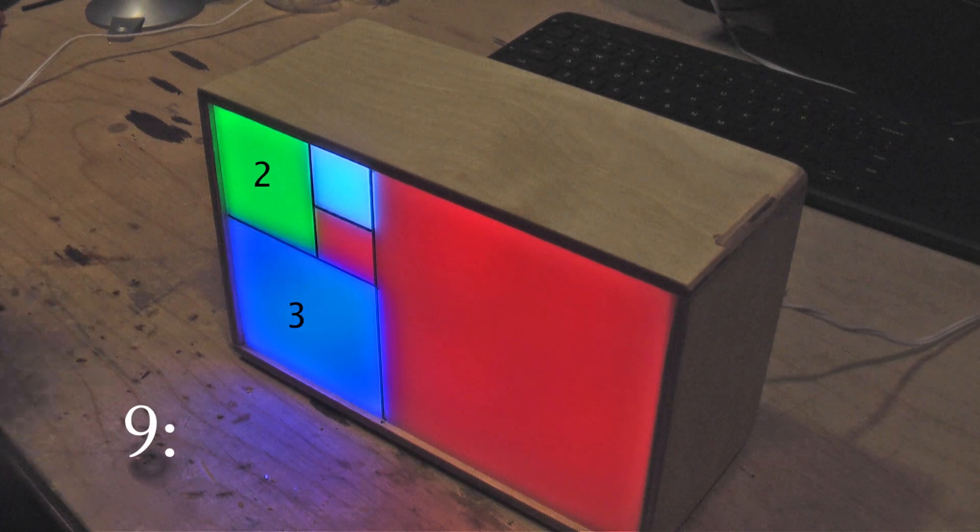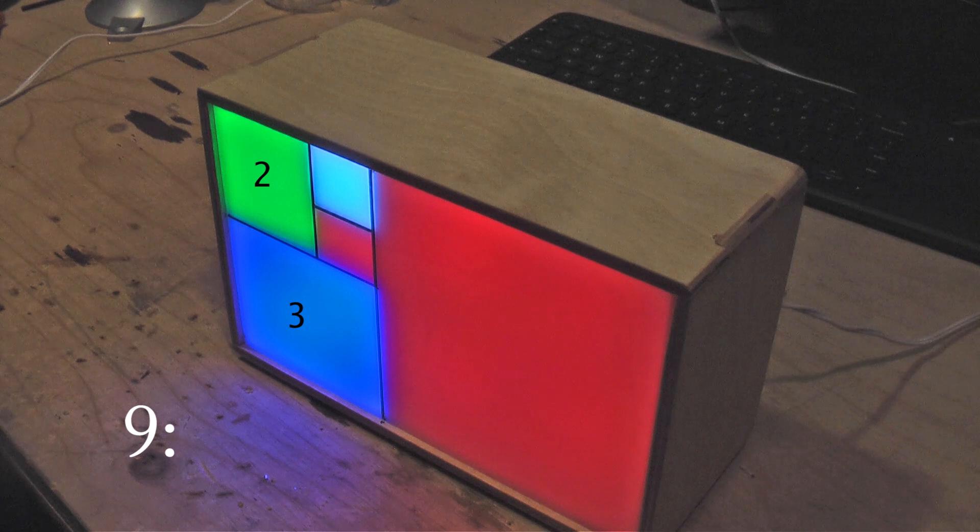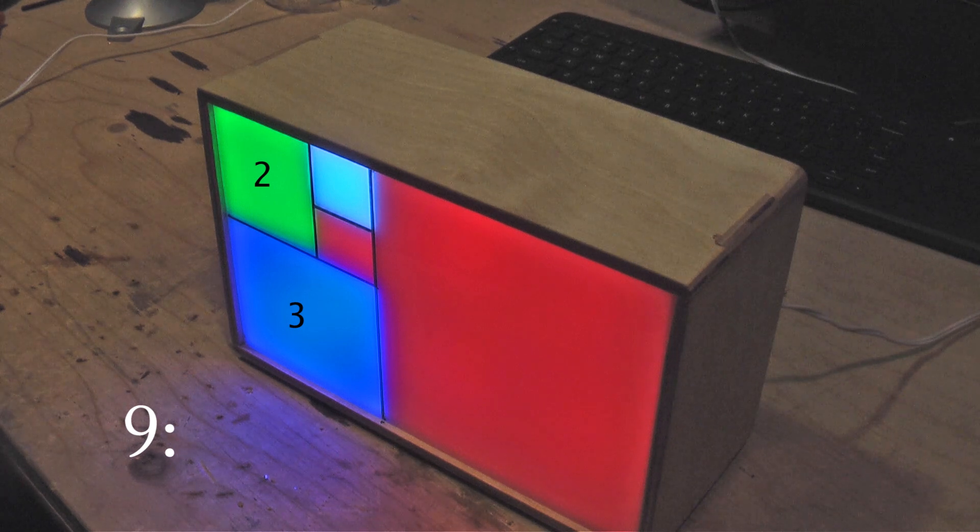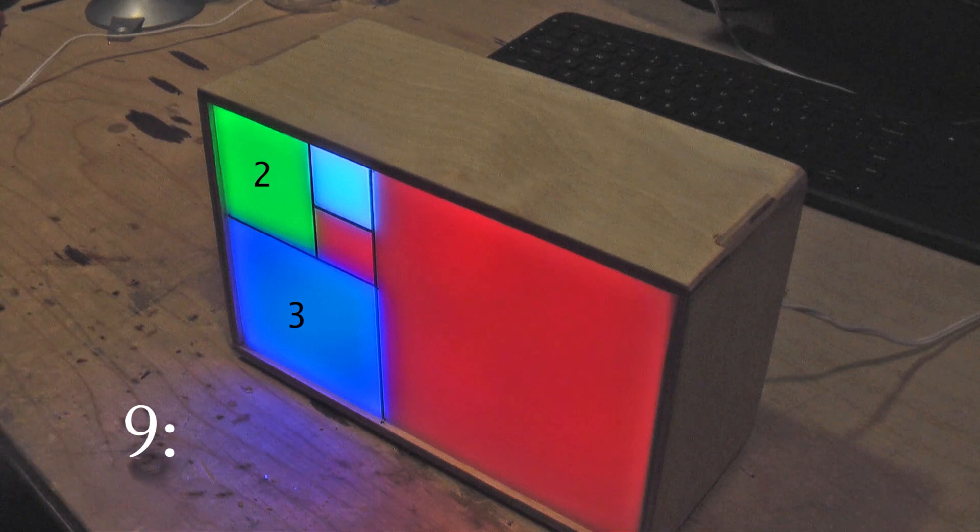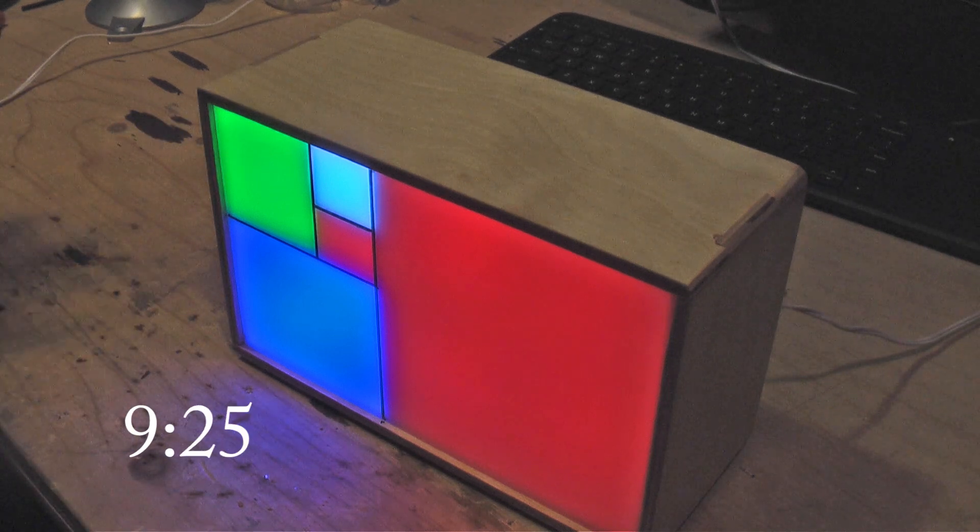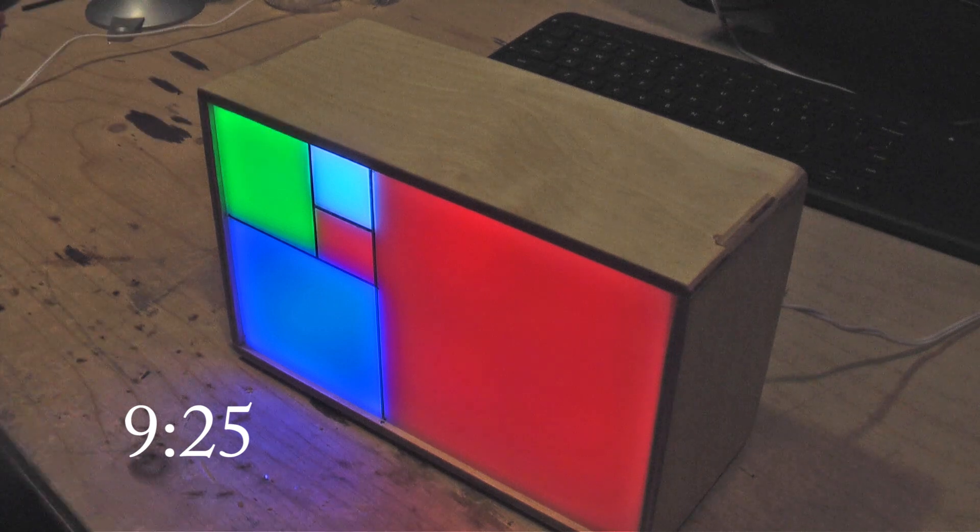To get the minutes, you add up the green and the blue squares, and you multiply it by 5, because the clock is accurate to the 5 minutes. Here we have 3 plus 2, 5, multiplied by 5, 25, so it's 9:25. The white squares are ignored.